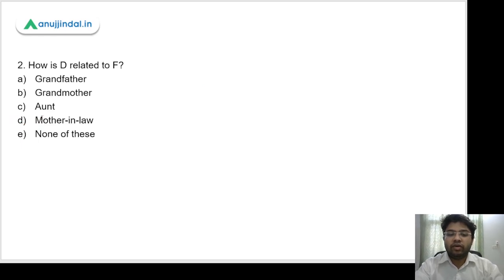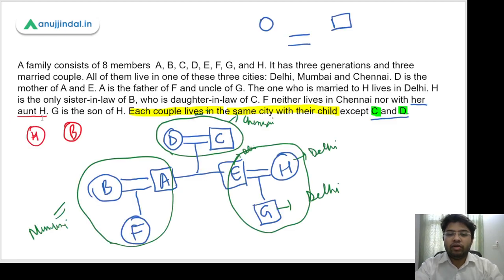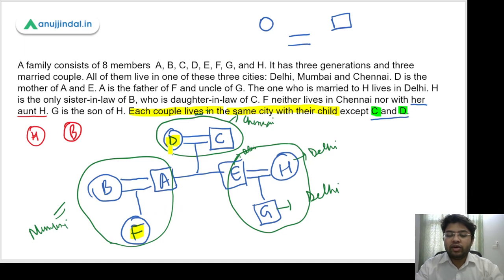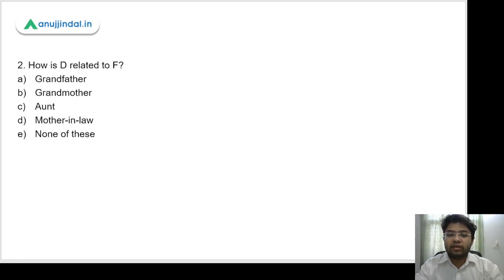Question 2: How is D related to F? Looking at the family tree, D is the grandparent of F, and since D is female, D is the grandmother of F. So the correct answer is option B — grandmother.